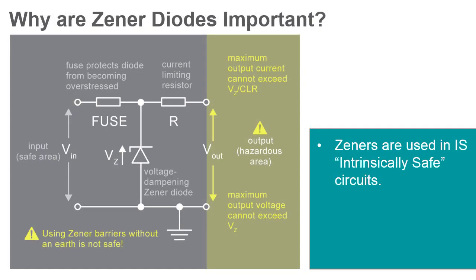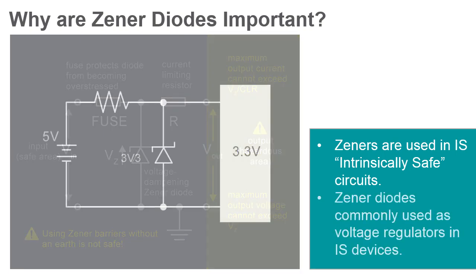Zener diodes are important components in intrinsically safe circuits. One of the most common methods of protection is to limit electrical current with multiple resistors in series and to limit electrical voltage with multiple Zener devices to ground. Equipment and instrumentation specifically designed for use in hazardous areas usually operates with low voltage and current. In addition to the protection from over voltage, Zener diodes are used to regulate the operational voltages of these devices.